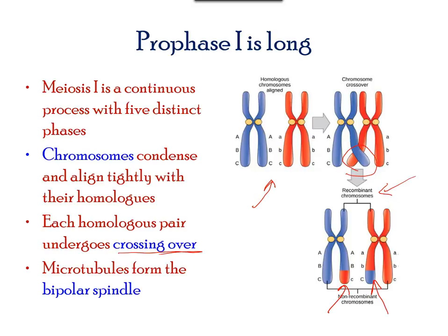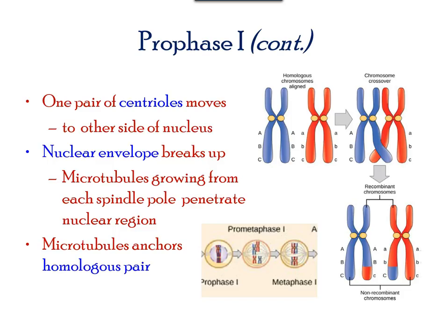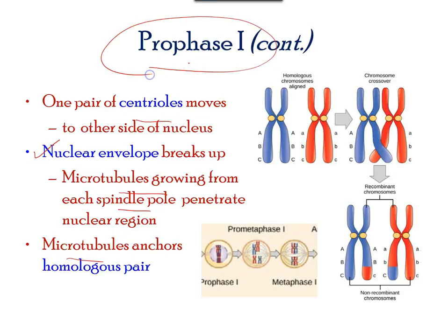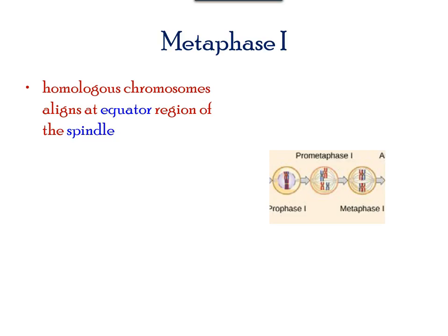Crossing over happens during prophase I. The rest of the stages — such as the nuclear envelope breaking apart, spindle formation starting, and centrosomes moving towards opposite poles — still happen during prophase I. In metaphase I, homologous chromosomes align at the equatorial plate. However, notice that homologous chromosomes are still in pairs.